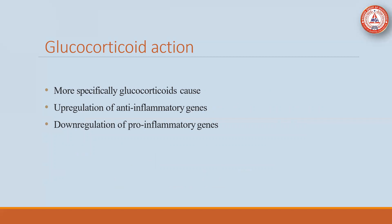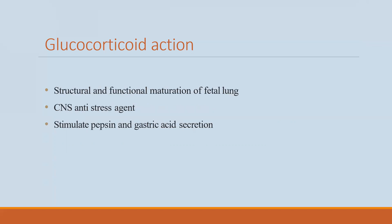More specifically, glucocorticoid is also used for the upregulation of anti-inflammatory genes, downregulation of pro-inflammatory genes, and plays a vital role in various inflammatory processes. Glucocorticoid is also responsible for the structural and functional maturation and development of the fetal lung. It is used as an anti-stress agent in the central nervous system, and it stimulates pepsin and gastric acid secretion, leading to rapid metabolism of carbohydrates, fats, and proteins.